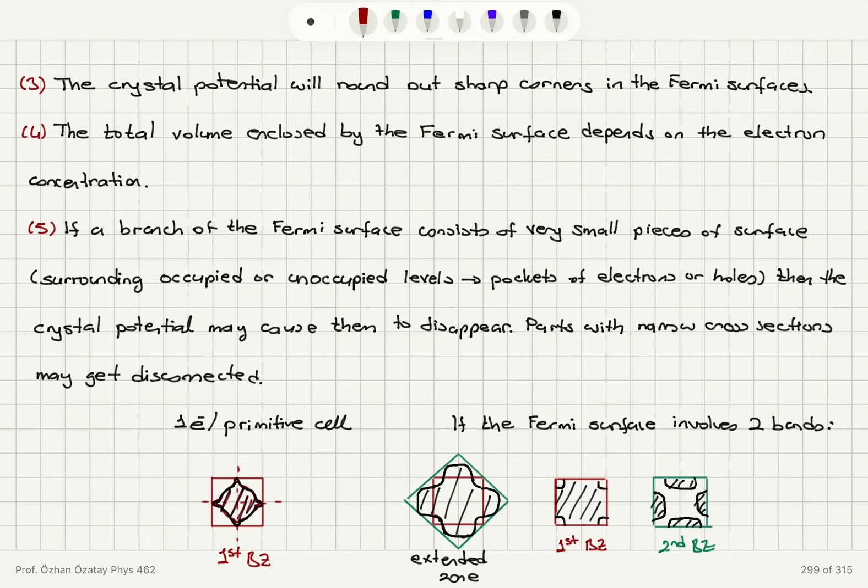Number three, the crystal potential will round out sharp corners in the Fermi surfaces. So no sharp corners are allowed.